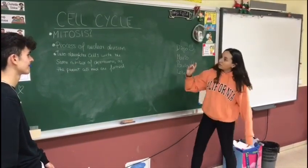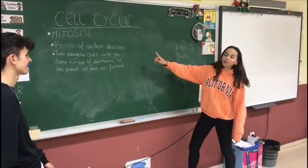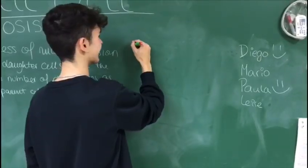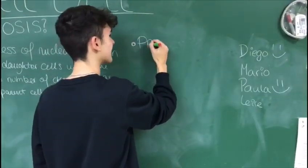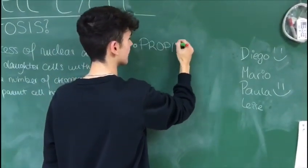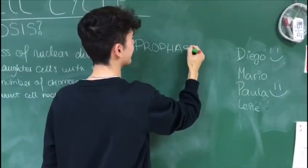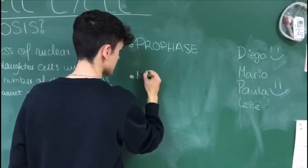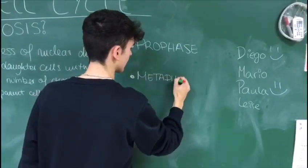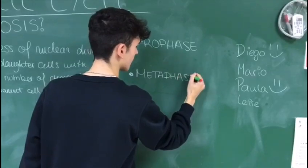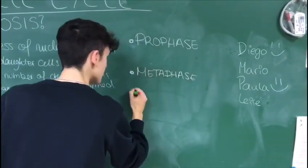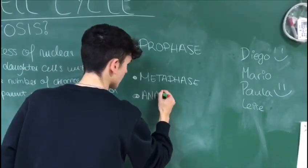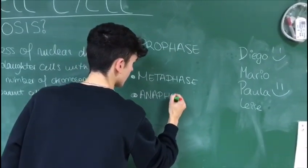But mitosis is also divided into four phases: prophase, metaphase, anaphase, and telophase. But some scientists believe there is a fifth phase between prophase and metaphase called pro-metaphase.